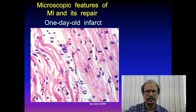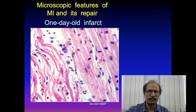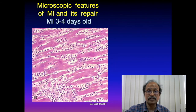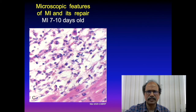A one-day-old infarct shows thinned-out myocardial fibers, loss of nuclei, edema between fibers, and wavy fibers microscopically. A three-day-old infarct shows macrophages and neutrophils. A one-week-old infarct is characterized by fibroblasts, macrophages, and proliferating capillary channels — the hallmarks of granulation tissue.